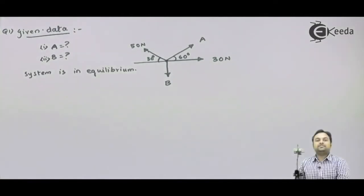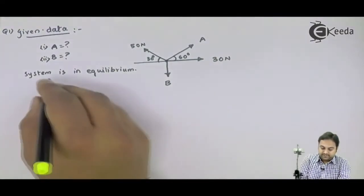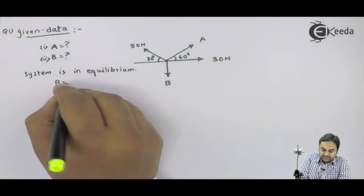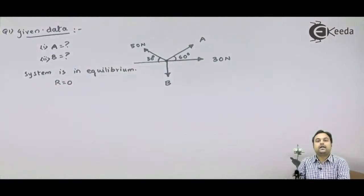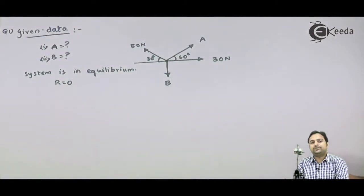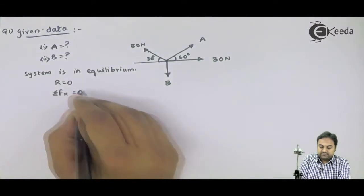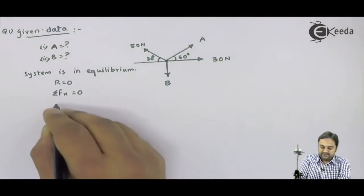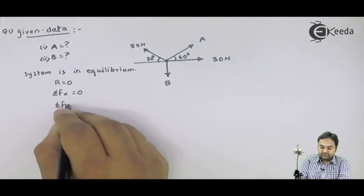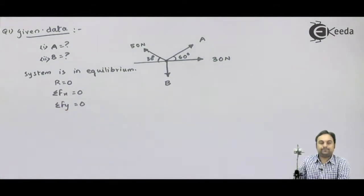If system is in equilibrium, the meaning is resultant is 0, and if resultant is 0 then even the component of resultant - that is sum of all horizontal forces - that will be 0, and sum of all vertical forces that also would be 0. Now with this much data given, let us try to solve the problem. I will read the solution.